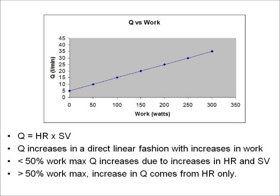Next slide is cardiac output (Q) versus work. Q equals heart rate times stroke volume. Q increases in a direct linear fashion with increases in work. Less than 50% work max, Q increases due to increases in both heart rate and stroke volume. Greater than 50% work max, the increase in Q comes from heart rate only.